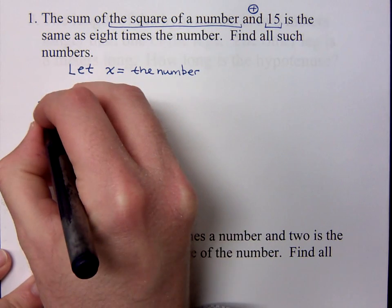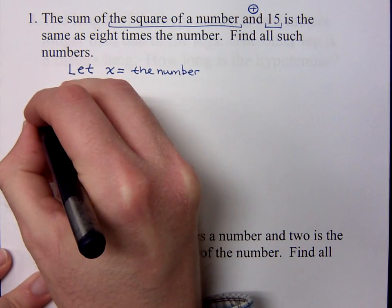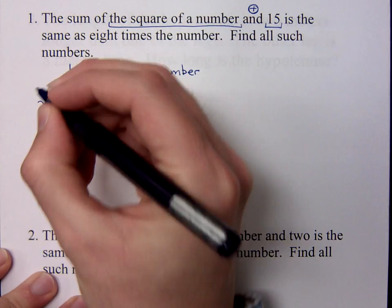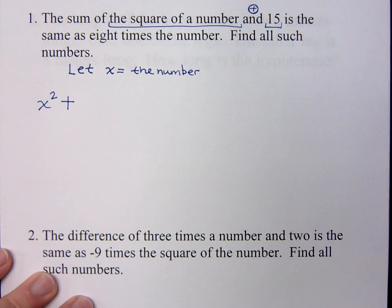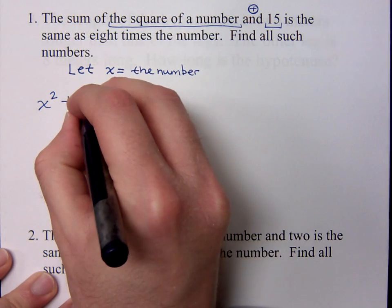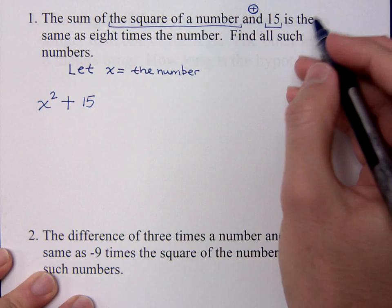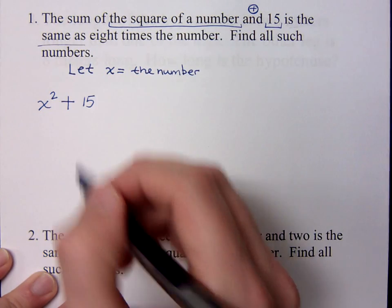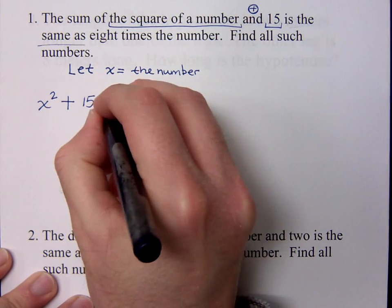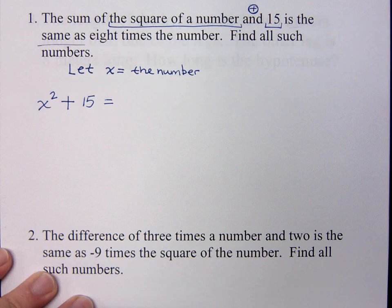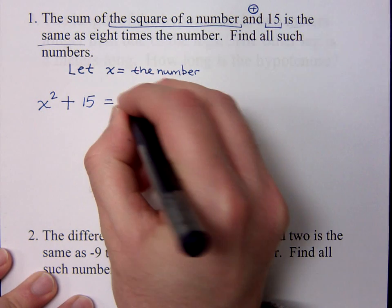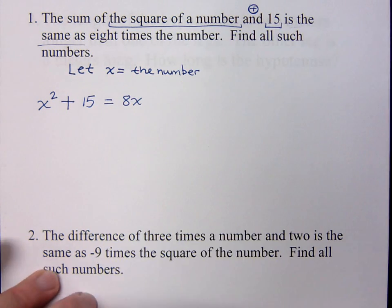So how would you write the square of a number? X squared. Since I'm letting the number be x, the square of that number is x squared. Plus 15. And then plus 15. Then it says, is the same as, so that's equals. How would you write 8 times the number? 8x. We would say 8x. Do you all agree?